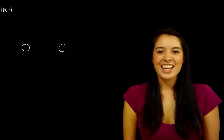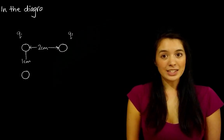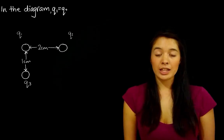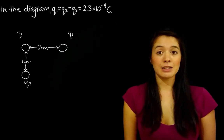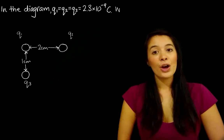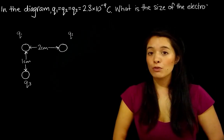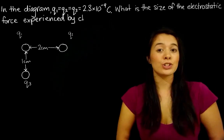So the question is, in the diagram, Q1 equals Q2 equals Q3 equals 2.3 times 10 to the negative 9 coulombs. What is the size of the electrostatic force experienced by charge Q1?